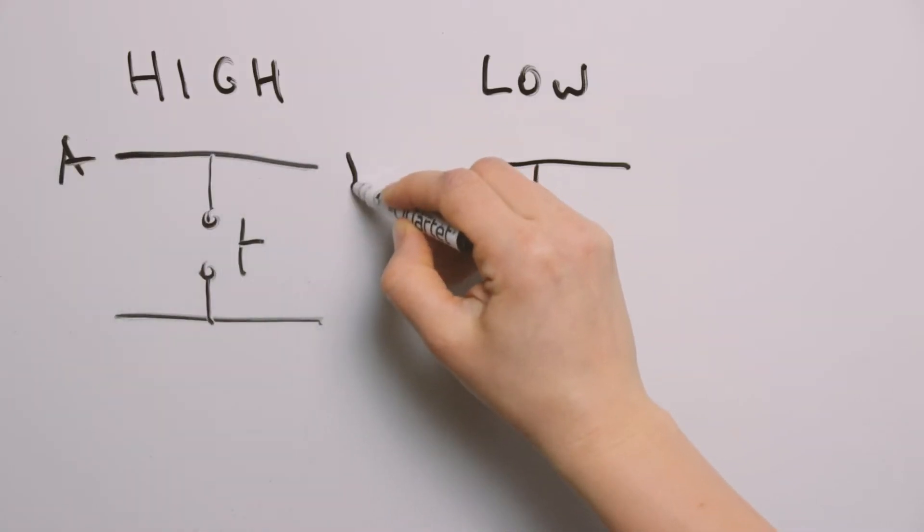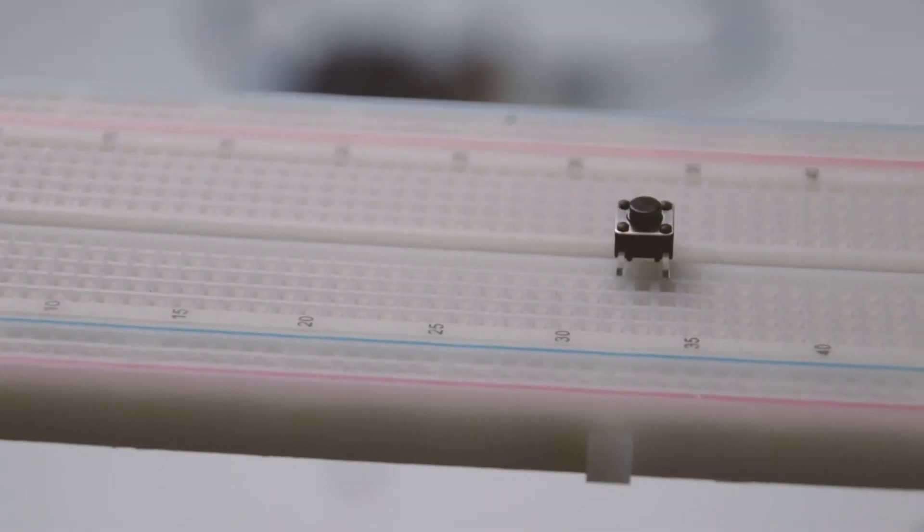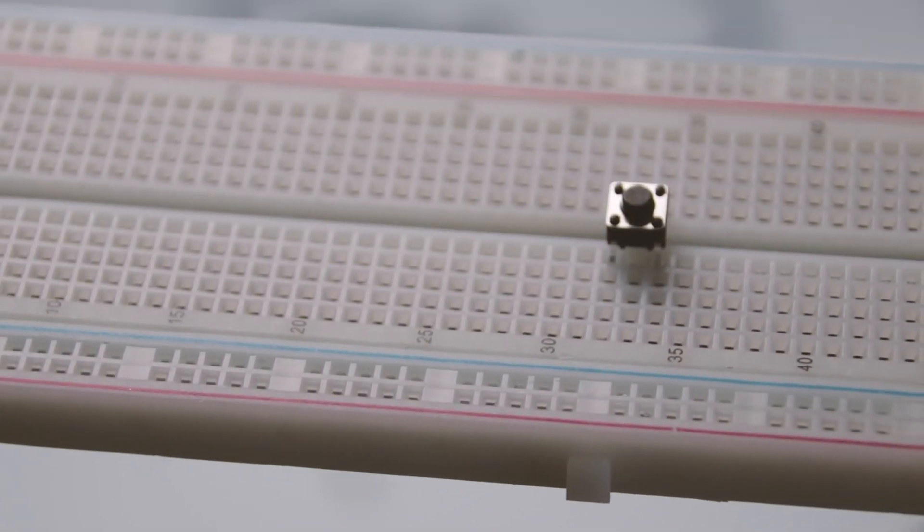The specific switch button has four connections which can be a little confusing. Inside the switch package two pins at the bottom are connected and two pins at the top are connected. They need to be placed correctly on the breadboard so that they are far enough apart.